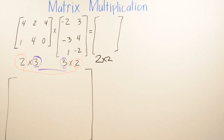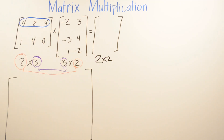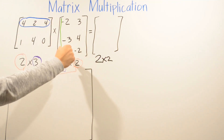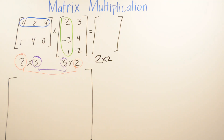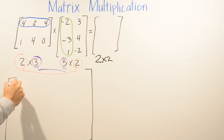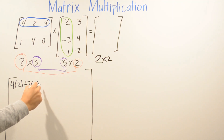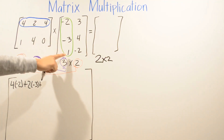To find the first corner of the result matrix, we multiply the first row of the first matrix by the first column of the second matrix: 4 times negative 2, plus 2 times negative 3, plus 4 times negative 3, plus 4 times 1.